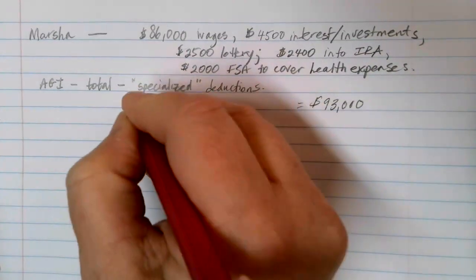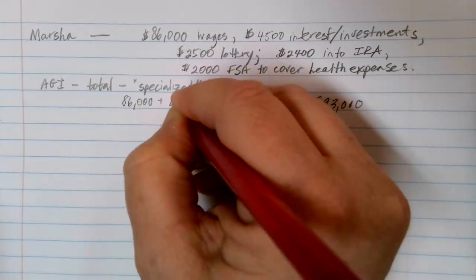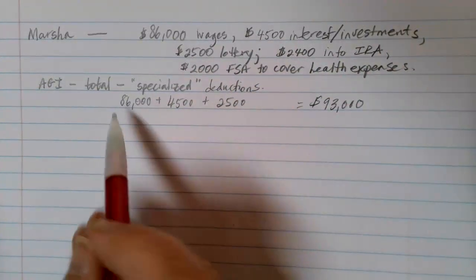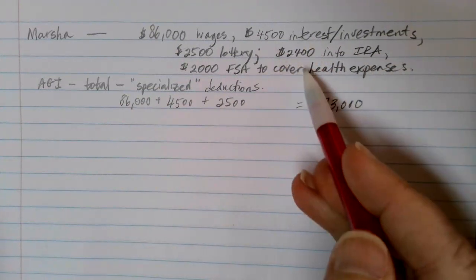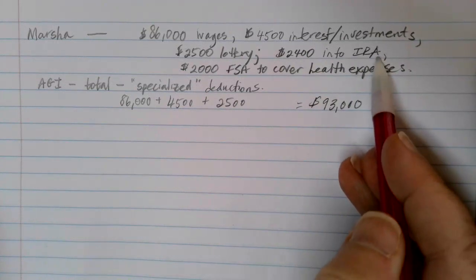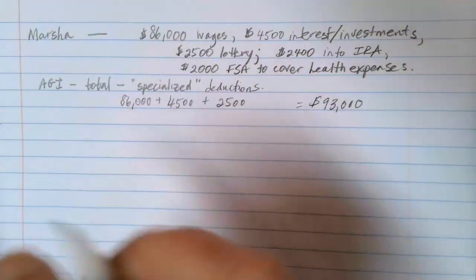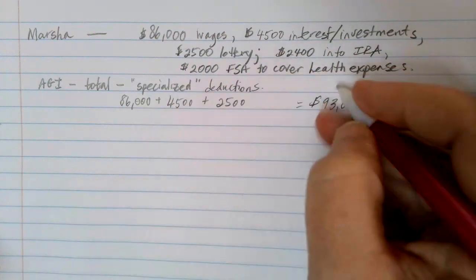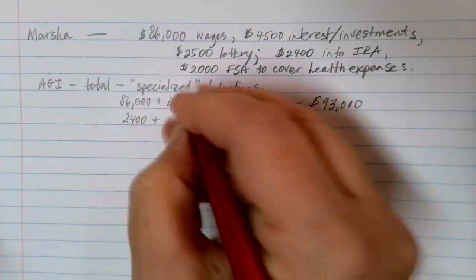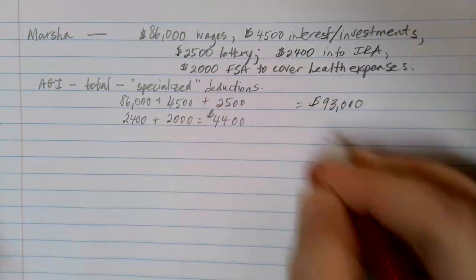That $93,000 represents wages plus interest plus the lottery win. Now, the specialized deductions that Marsha can make are the money she set aside for her retirement account and for her health expenses. So her specialized deductions are $2,400 plus $2,000, giving her $4,400 in specialized deductions.